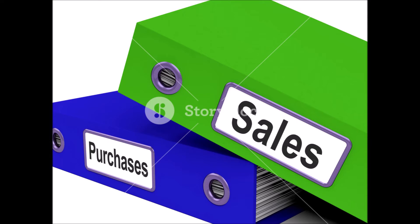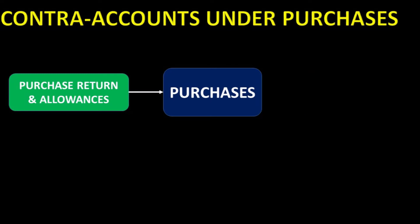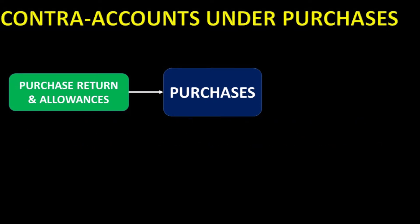When merchandise is acquired or sold under the periodic system, we use a Purchases account. The cost of merchandise acquired is collected using the Purchases account. There are two contra purchase accounts: Purchase Returns and Allowances, and Purchase Discounts. Purchase Returns and Allowances contains deductions from purchases for defective items returned to suppliers — for example, when a business entity receives defective goods and returns them to the supplier.